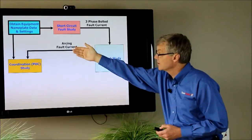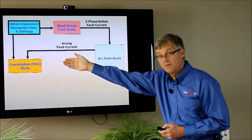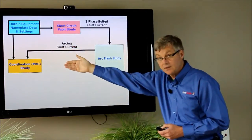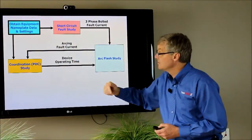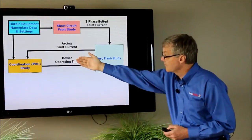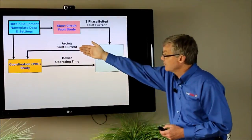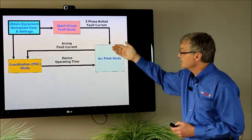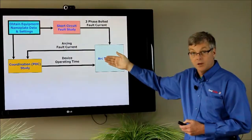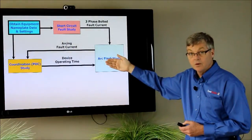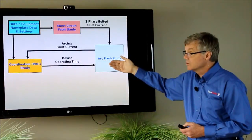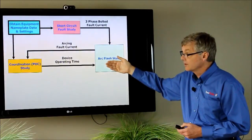Once we know what this arcing fault current is and our upstream protective device and its settings then the coordination module will give us the device operating time and once we know the arcing fault current and device operating times these numbers are plugged into the IEEE 1584 equations and the equations will then calculate the arc flash energy and the arc flash boundary.